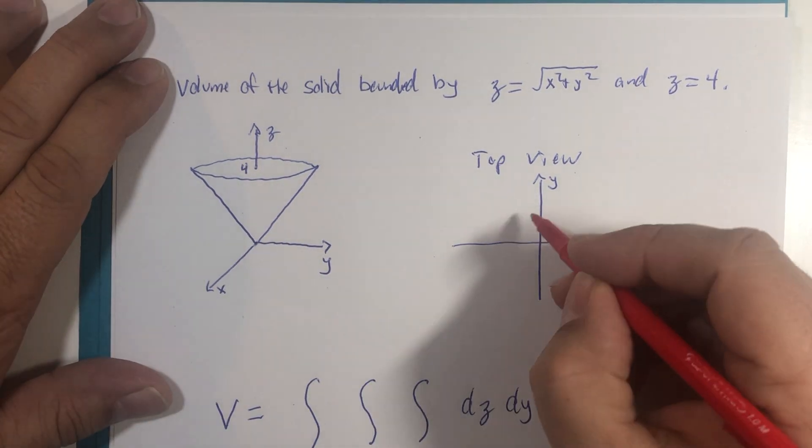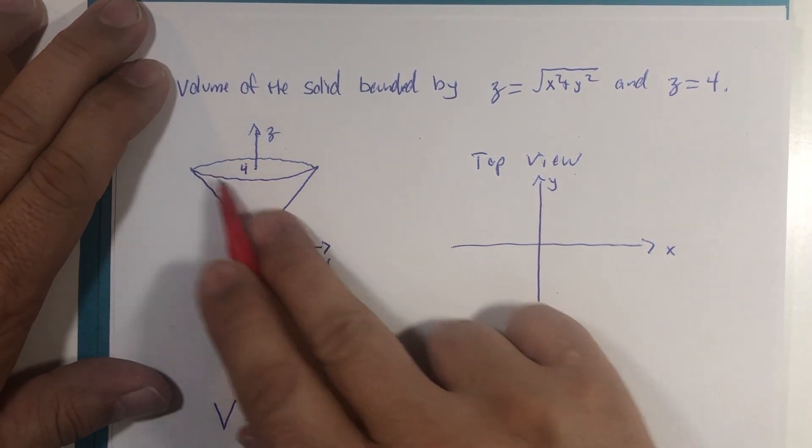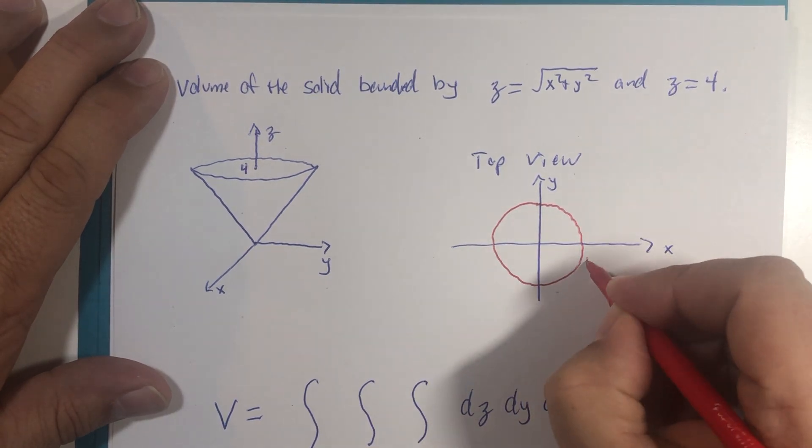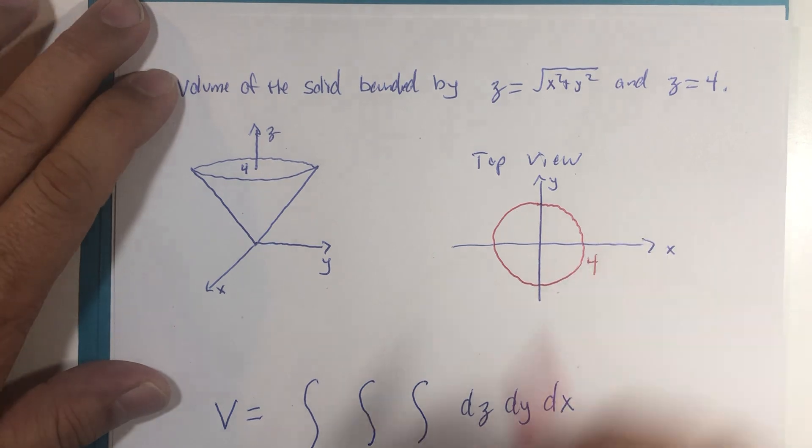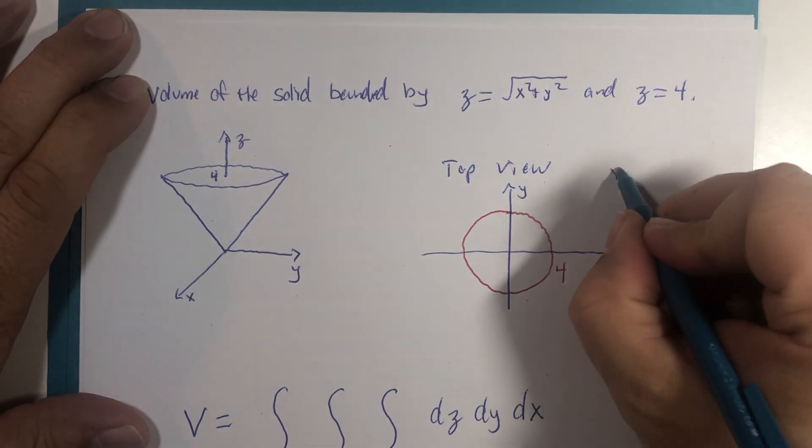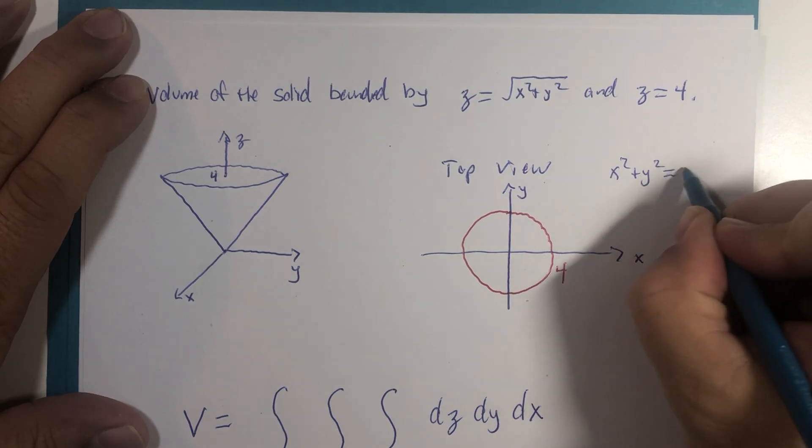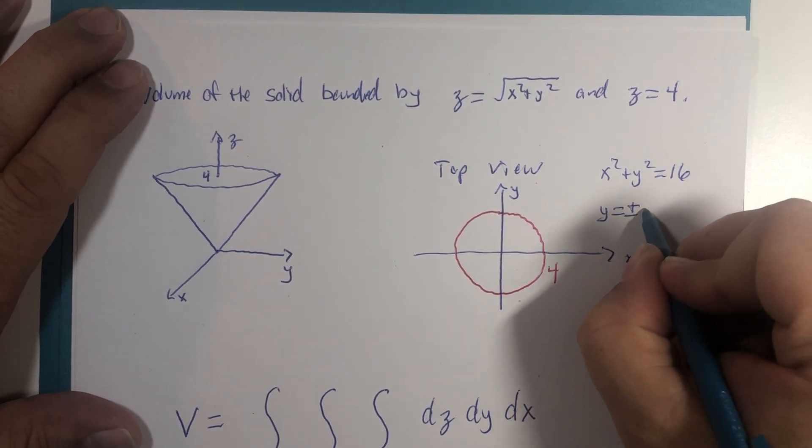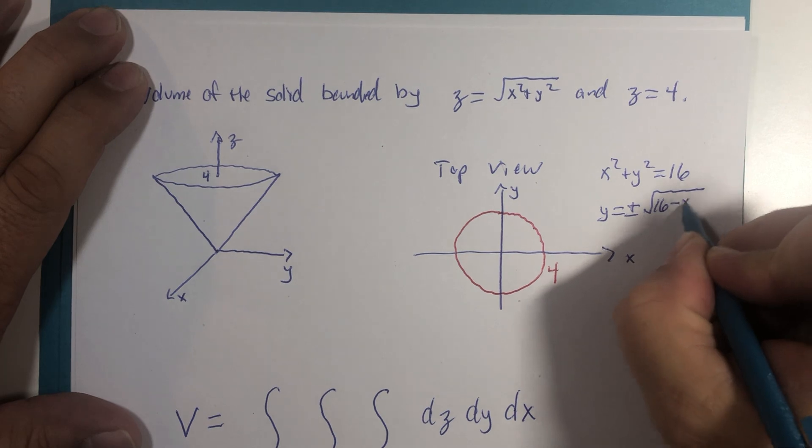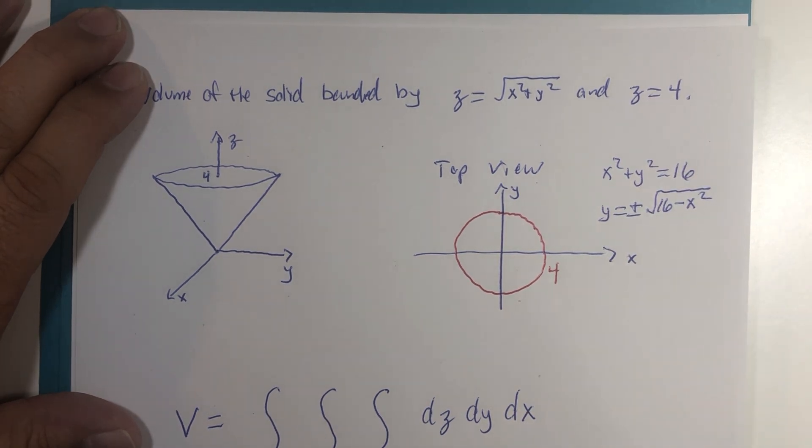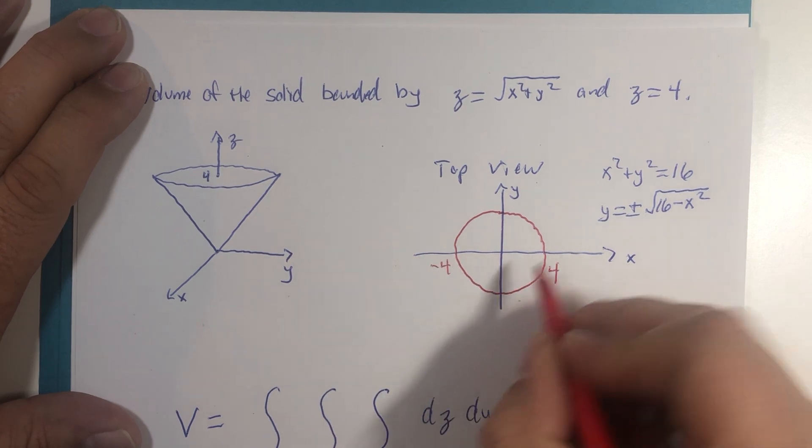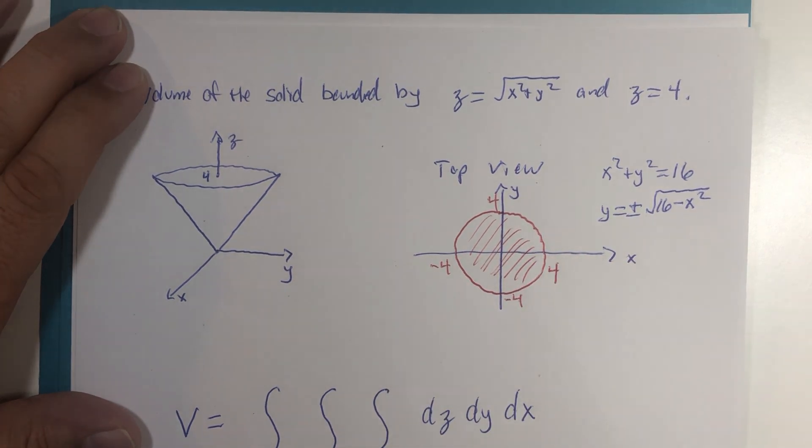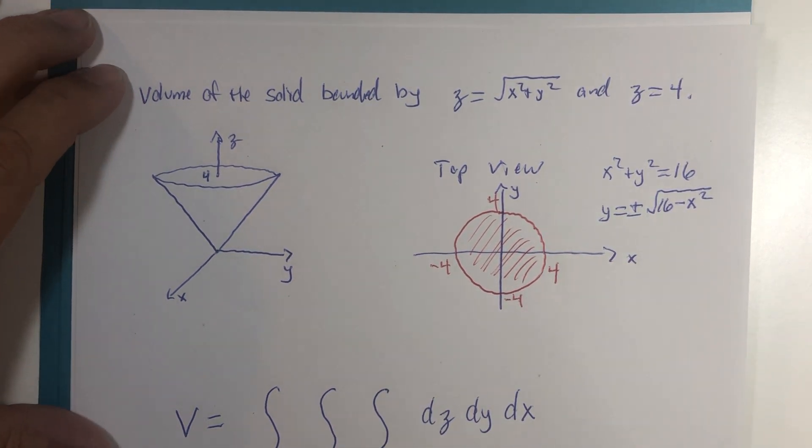As we just discovered, the cross section at the top is a circle of radius four. It has the equation x squared plus y squared equals four squared. Or y is equal to plus or minus the square root of 16 minus x squared. The x-intercepts are negative 4 to positive 4. This would be our two-dimensional region of integration if this was back a few sections ago.